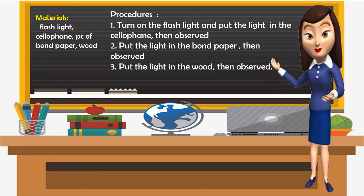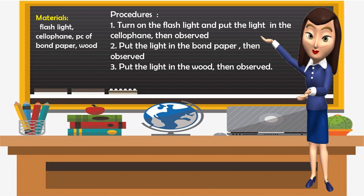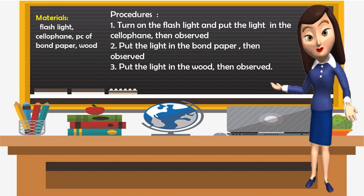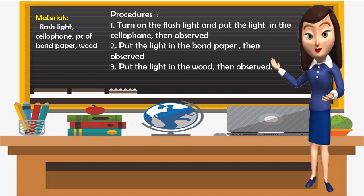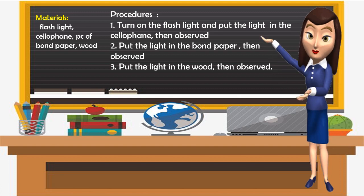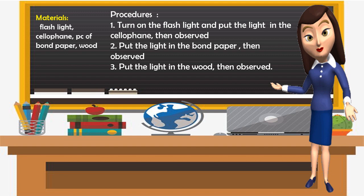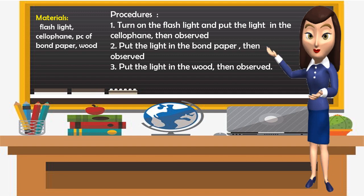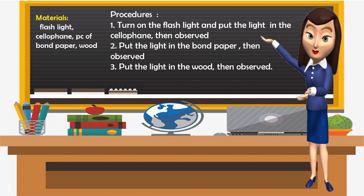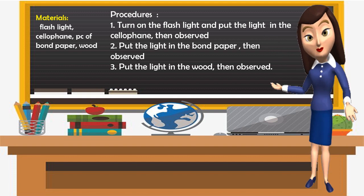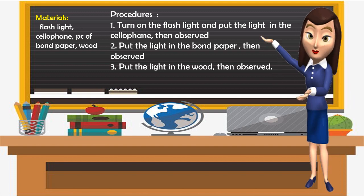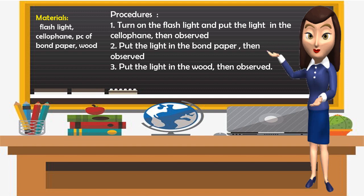Now let's have an experiment. I want you to prepare the materials: flashlight, cellophane, a piece of bond paper, and wood. Here are the procedures. First, turn on the flashlight and put the light on the cellophane, then observe. Second, put the light on the bond paper, then observe. Lastly, put the light on the wood, then observe.